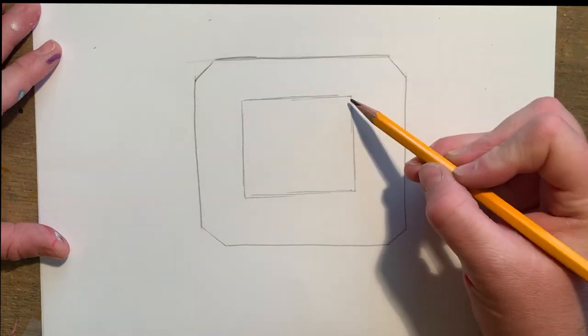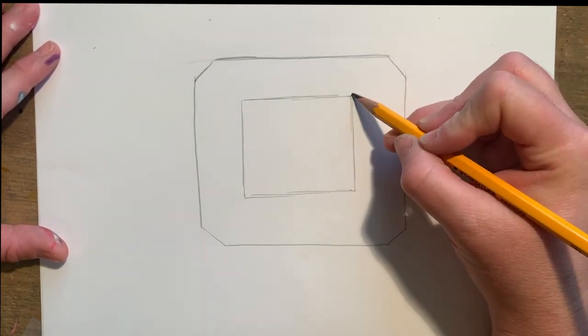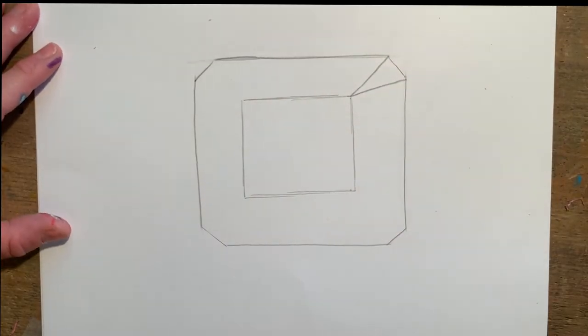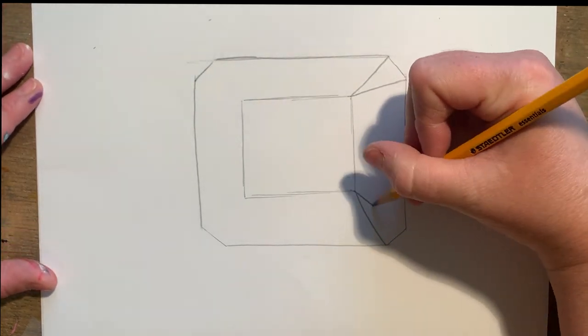Next I'm going to take each corner and connect it to the two points of my rounded corners. One, two diagonal lines. I'll repeat the same thing for each of the other corners.